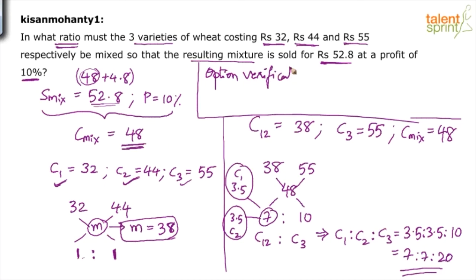One option gives you 7 is to 7 is to 20. How do you verify whether it is correct? Take 7 into 32 (first variety), 7 into 44 (second variety), and 20 into 55 (third variety). Divide by total quantity, 7 plus 7 plus 20. Find out how much is this. If this comes out to be 48, the mixture price, then that's the answer. Otherwise, go for second option, third option and so on. Whichever option satisfies 48 mixture price is the correct answer.